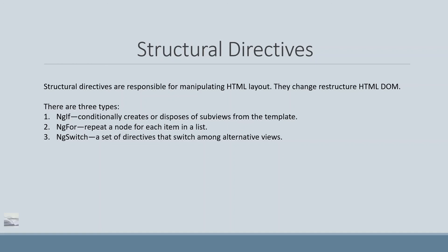Next is ng-for, which is more or less like a for loop — it repeats a node for each item in a list, creating the view accordingly. Then there's ng-switch, which is more like a switch statement — a set of directives that switch among alternate views. So let's do some practice in our next tutorial.